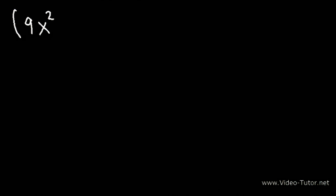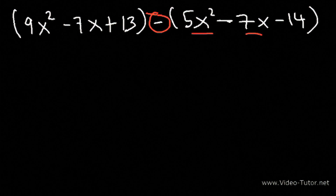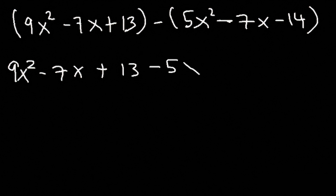Go ahead and try this one: 9x squared minus 7x plus 13 minus 5x squared minus 7x and minus 14. So go ahead and subtract these two polynomial expressions. The first thing I will do is distribute the negative sign to every term on the right — the signs will change. On the left side, just open the parentheses and rewrite it as 9x squared minus 7x plus 13. Then distributing the negative sign gives negative 5x squared plus 7x plus 14.